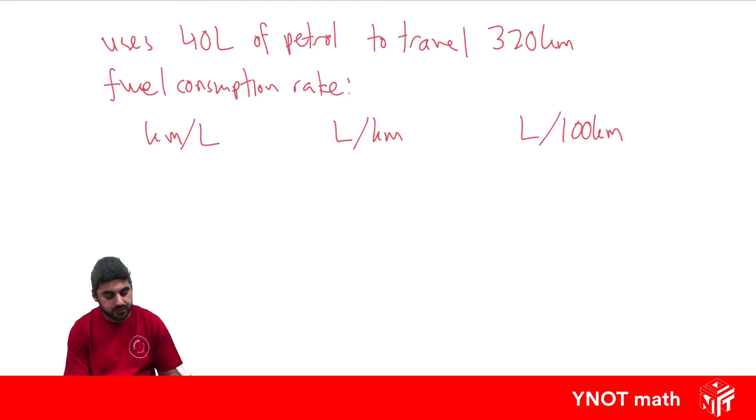For kilometres per litre we're just going to take our kilometres and divide by the number of litres. That's 320 kilometres per 40 litres, but we need it per one. So we divide 320 by 40, which gives us 8 kilometres per litre.